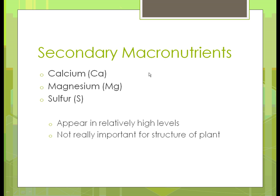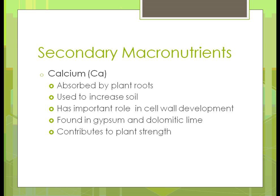The secondary macronutrients — while still needed in larger quantities than micronutrients, they aren't quite as much in demand as the primary macronutrients. These are calcium, magnesium, and sulfur. They still need relatively high levels, but they're not as important to how a plant grows in terms of its fiber and structure.